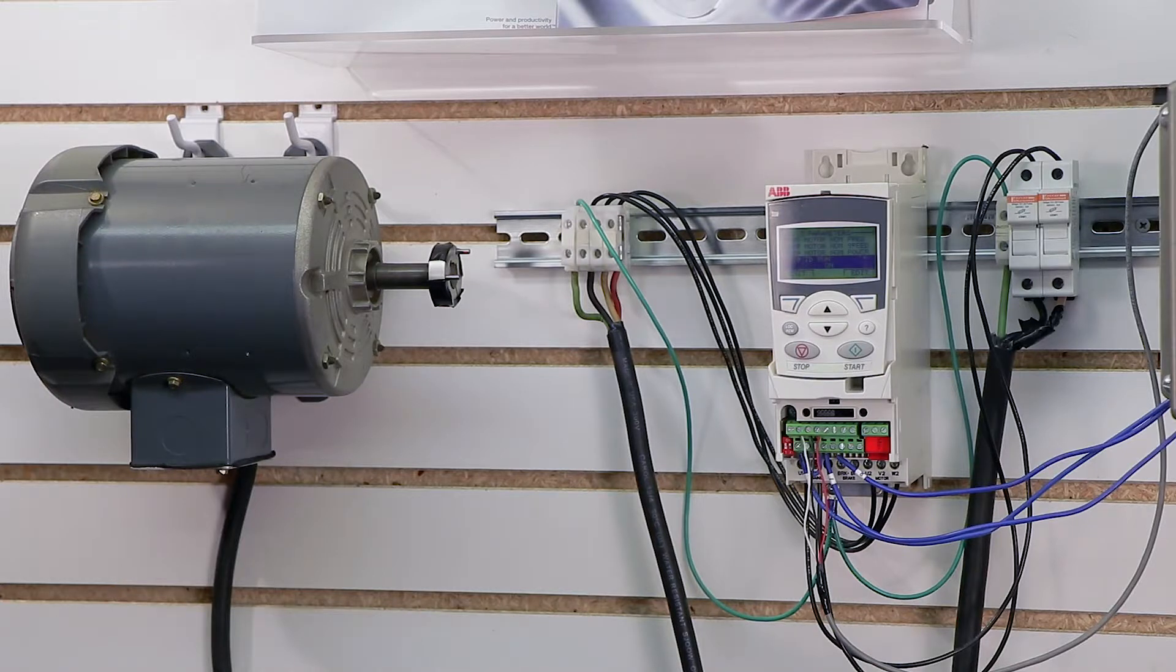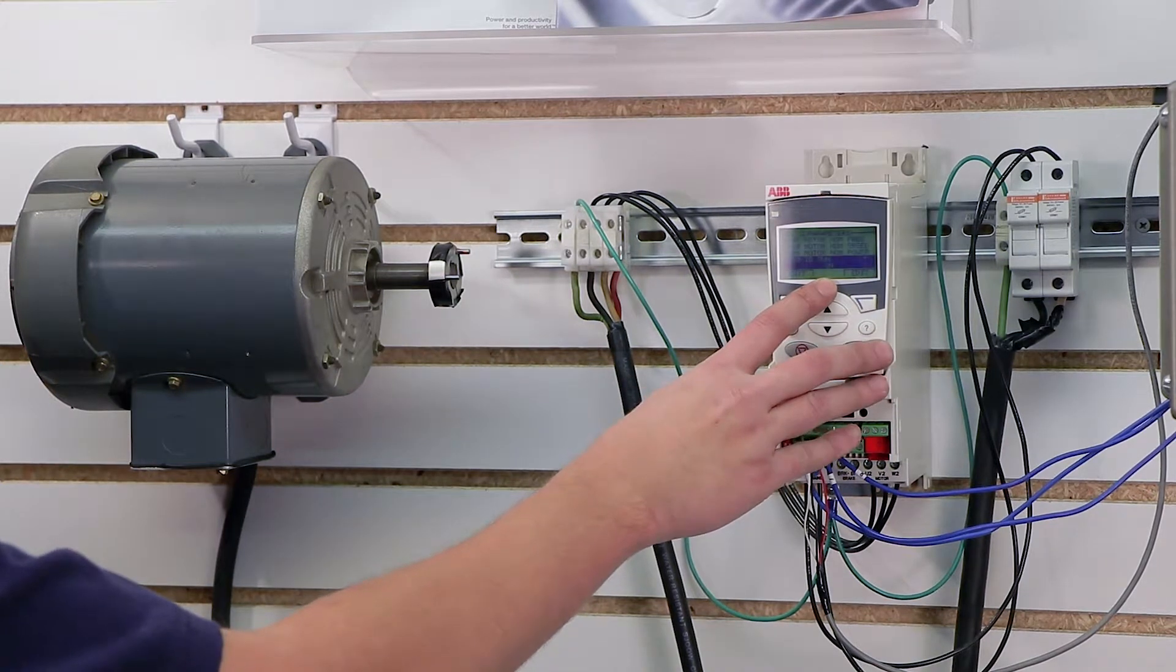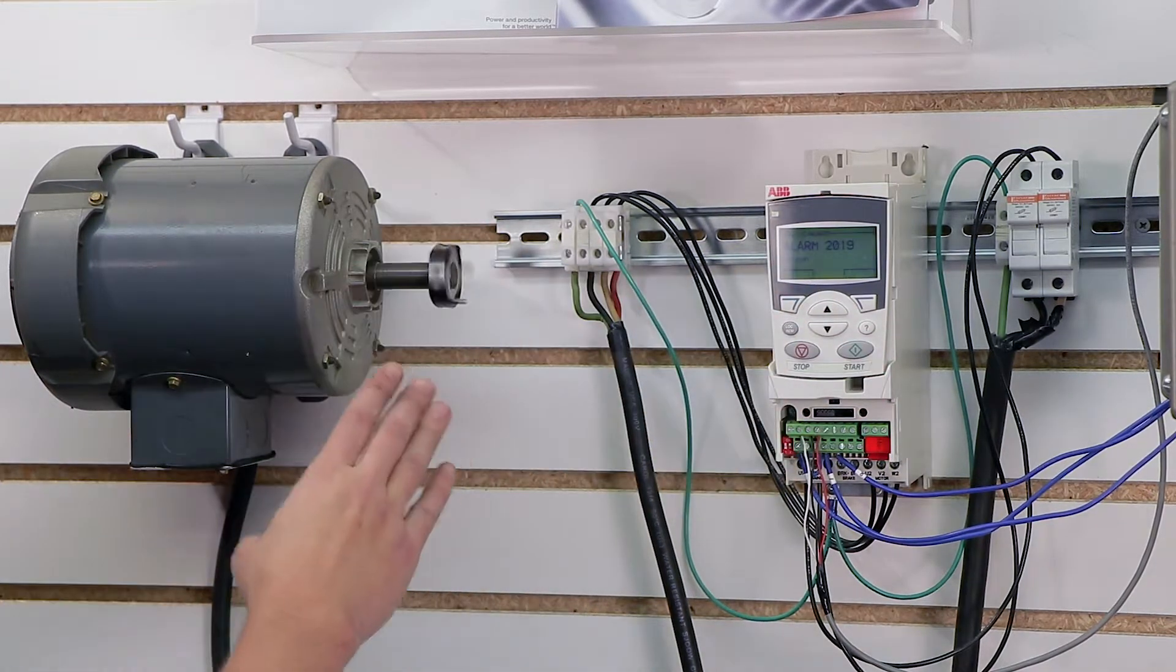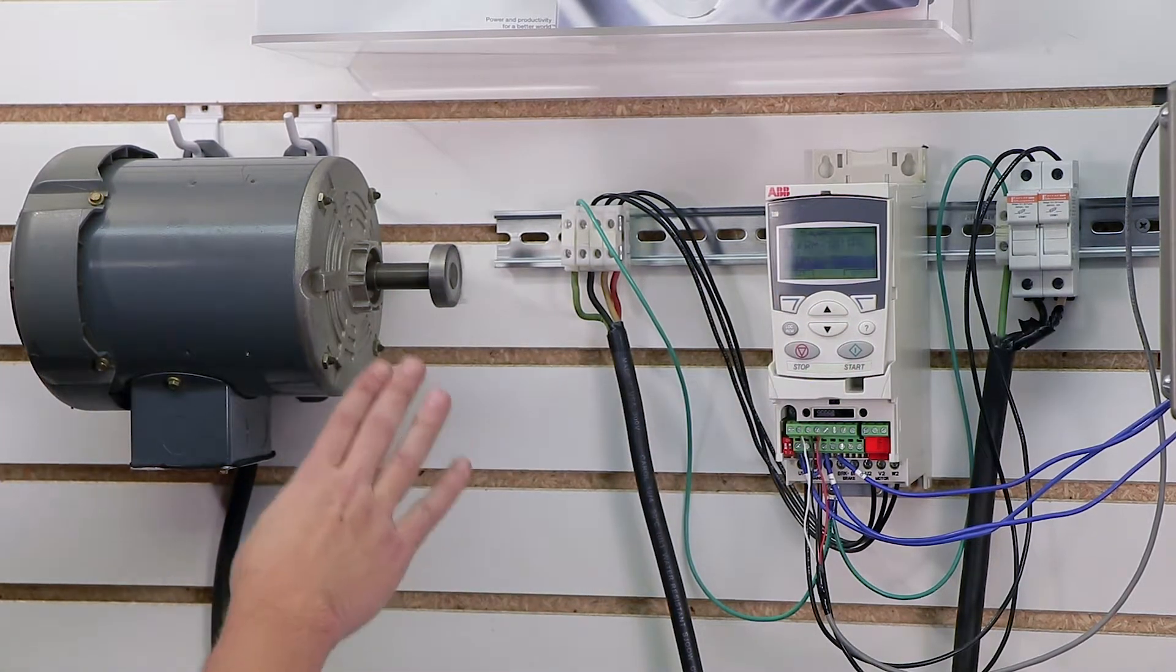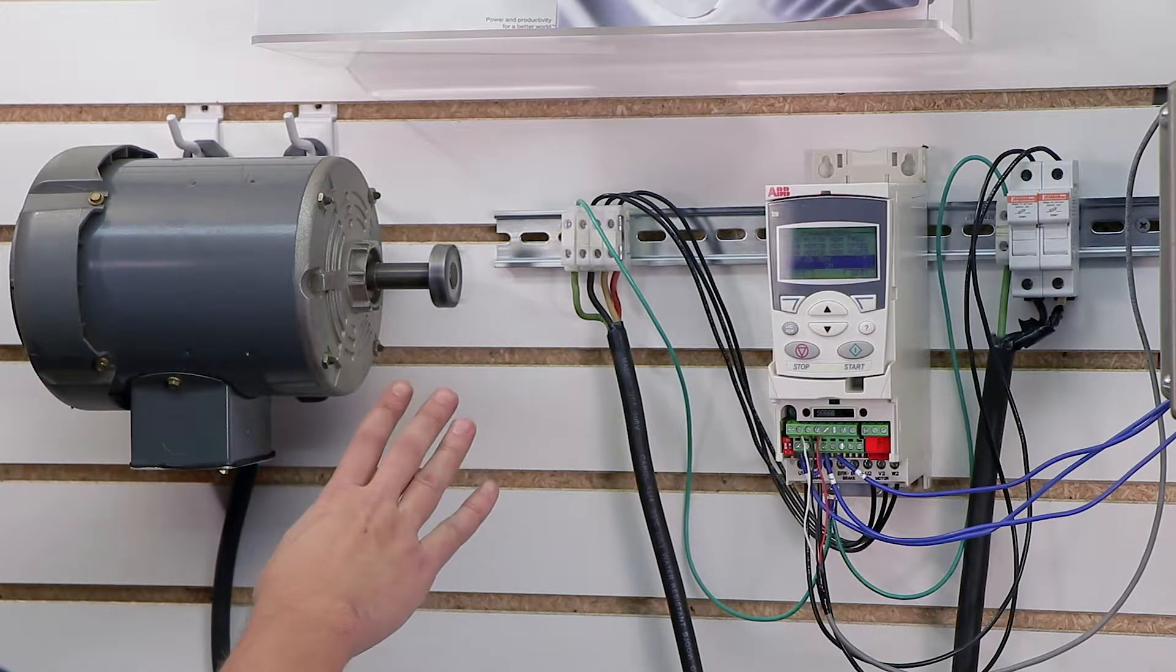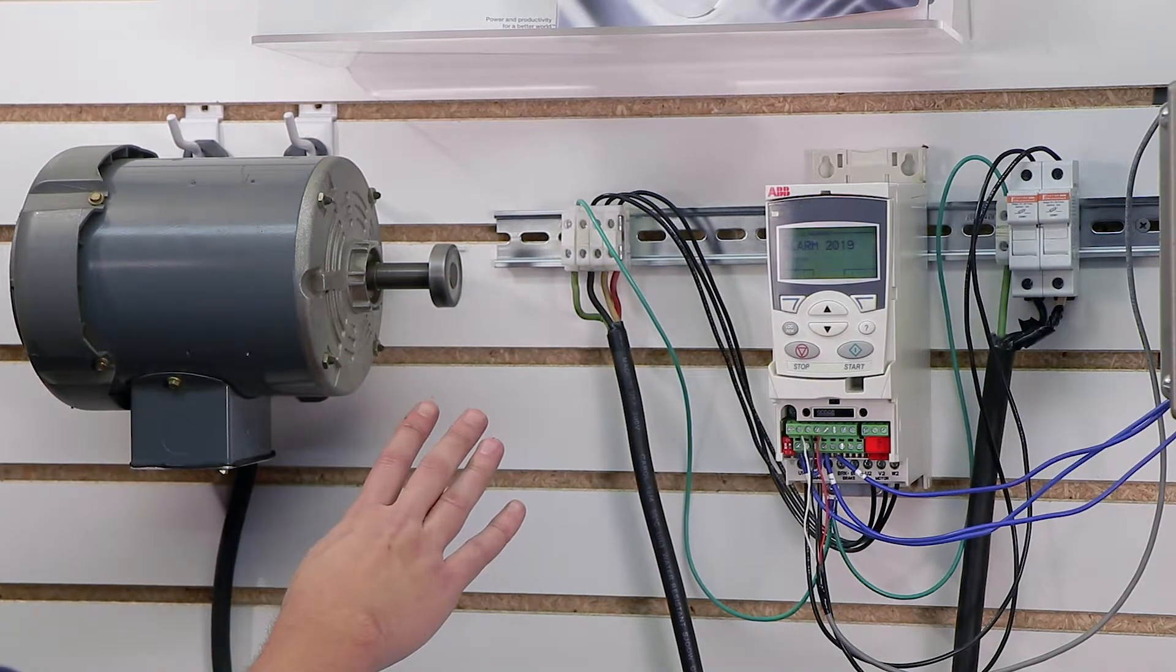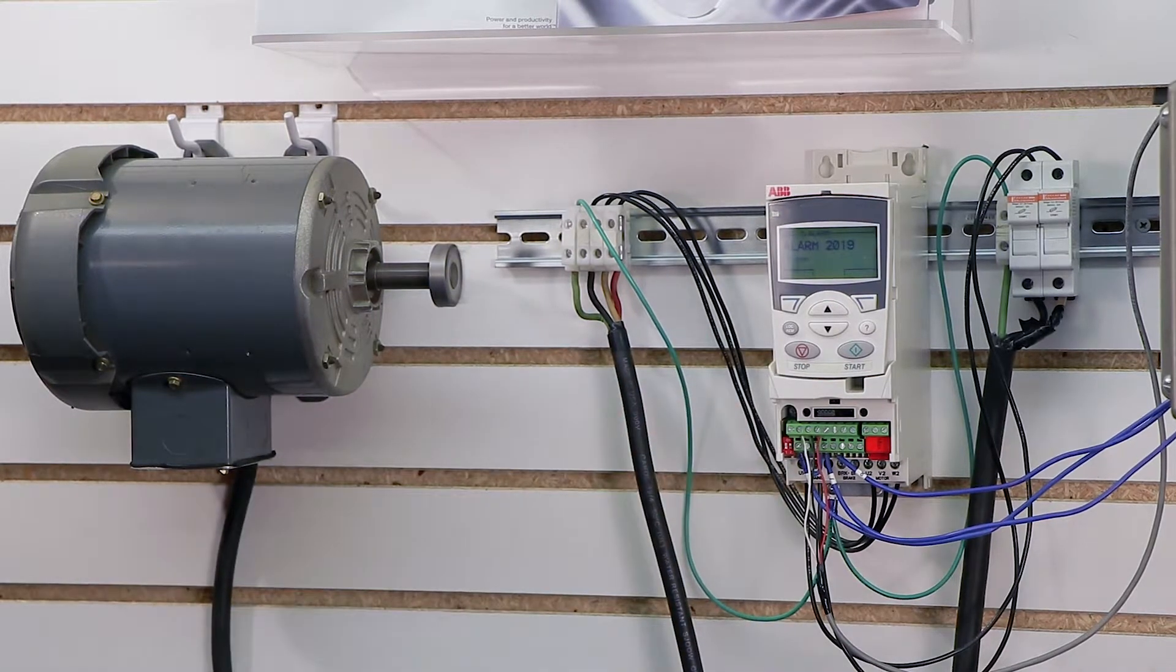And it's running it now. You'll notice it's whining a little bit. One important note to make is while it runs the ID run, it is going to rotate the motor, so before you run the ID run, make sure you disconnect the motor from any load and also make sure your direction of rotation isn't going to cause any damage to any external equipment. So right now it's running the ID run, which can take up to 60 seconds.